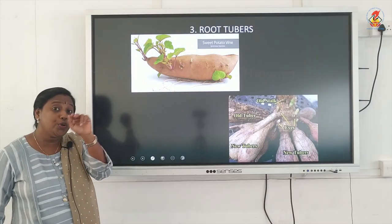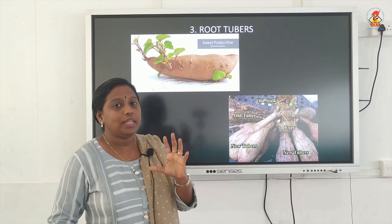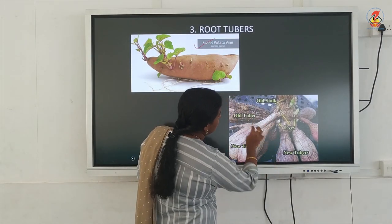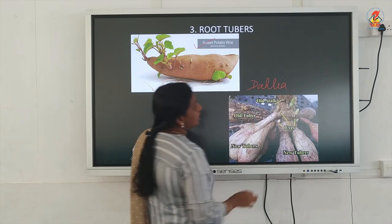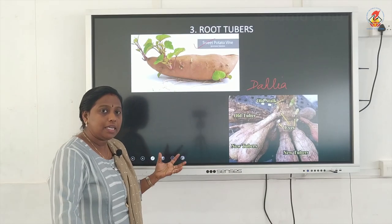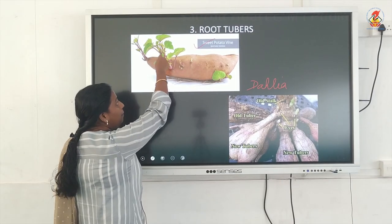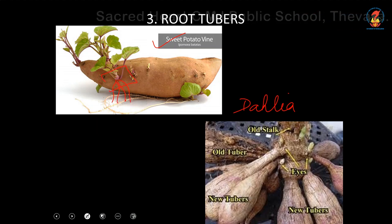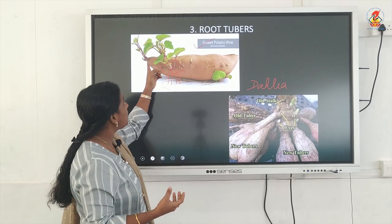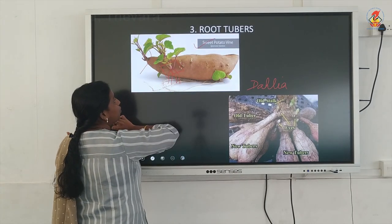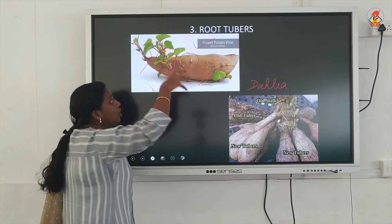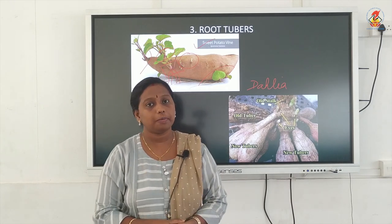Next is a root tuber. When food is stored in a root, you call it a root tuber. You can find root tubers in plants like sweet potato and dahlia. These root tubers also have buds on them from which plants can arise — stem comes up and roots develop downward. From one single root tuber, many small plants can be produced by cutting it into portions, each with a bud.